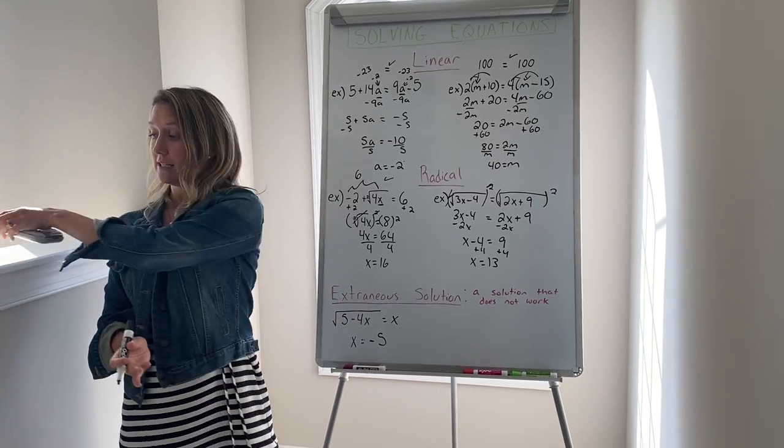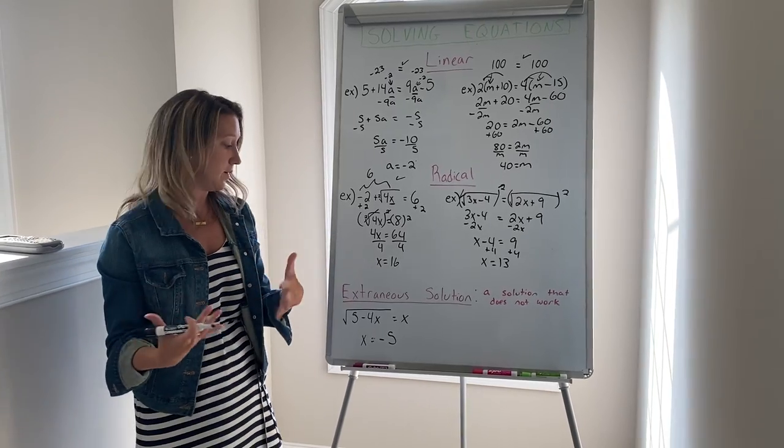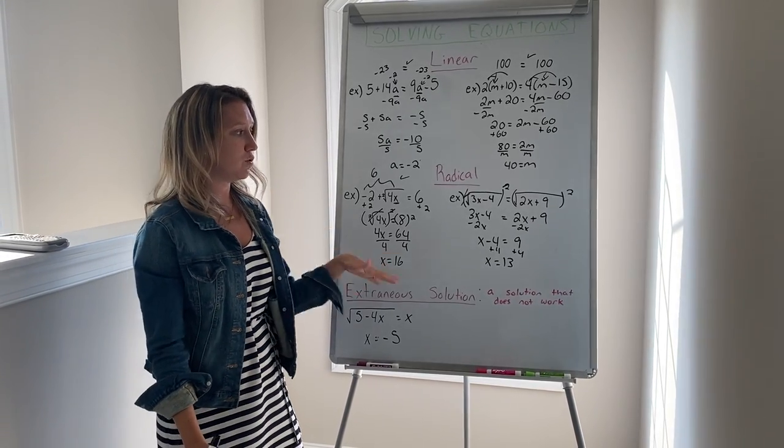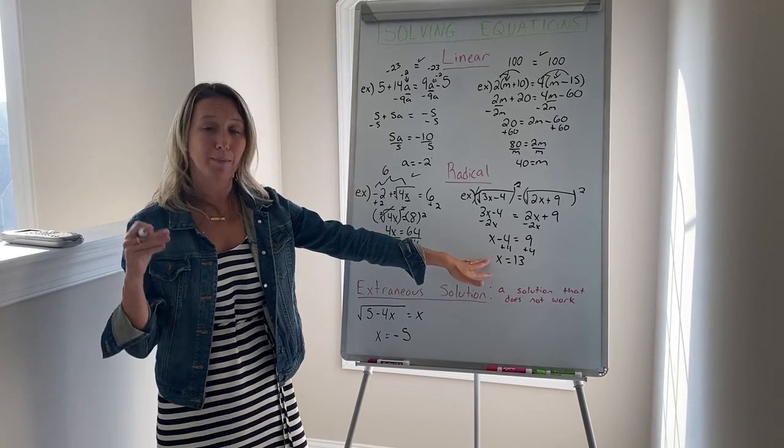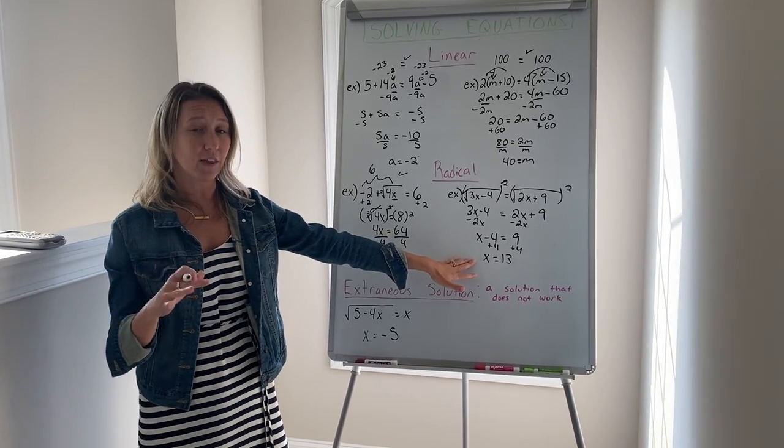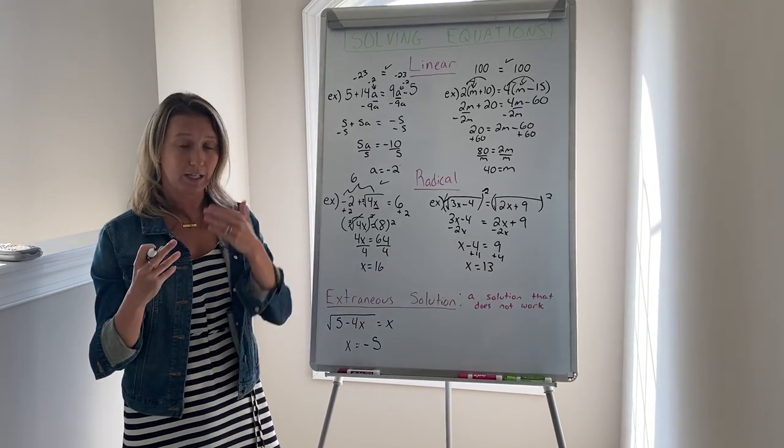Now the last thing is again to look at extraneous solutions, which is why I said it's so important to always check your answer. An extraneous solution is when you do the work correctly and you get an answer like we did here, but when you plug it back in it doesn't actually work. So it's not that you did the math wrong, it's that it's an extraneous solution that doesn't actually work when you plug it back in to check.